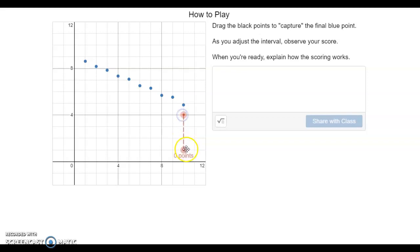You can see if I move these dots, I create a window. The point, the last point, is not in the window, so I gain zero points to my score.